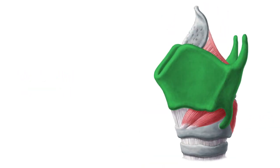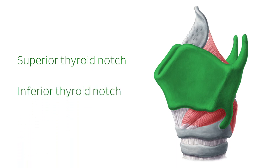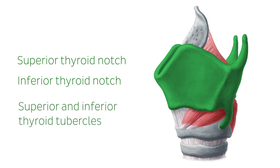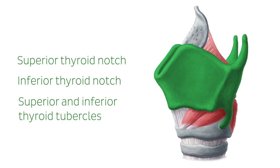Other important structures of the thyroid worth mentioning include the superior thyroid notch, which is located on the upper portion of the thyroid cartilage, while the inferior thyroid notch is a shallow notch found at its lower margin as seen here. The superior and inferior thyroid tubercles are small lateral prominences on the outside of the thyroid lamina, located at the upper and lower ends of the oblique line, respectively.